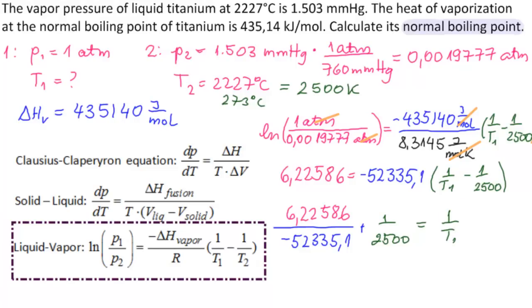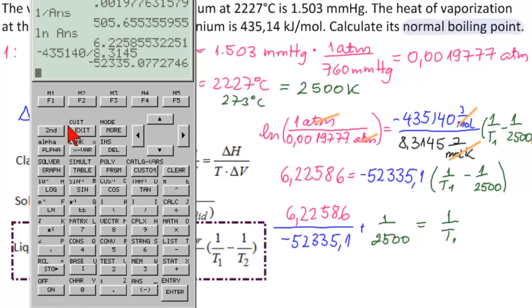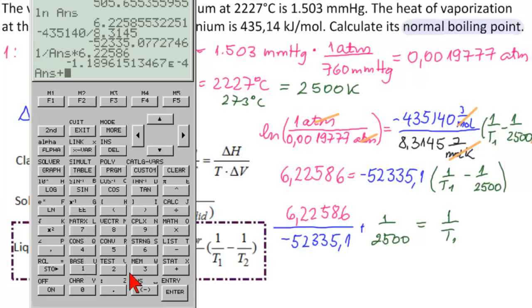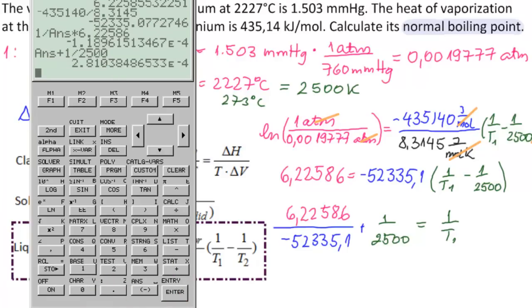So let's find that. So we have, we can take this answer here. We didn't save that one, so we'll have to take this answer here. So 1 divided by second answer gives us 1 over this. Times 6.22586. And then that plus 1 divided by 2,500. And we get 2.81038.